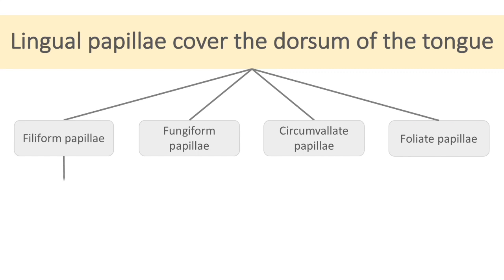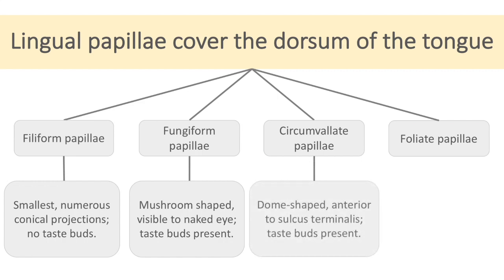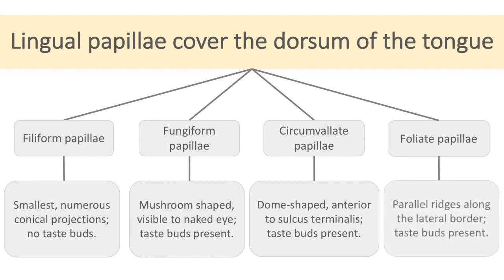Filiform papillae are the smallest and most numerous types of papillae — they are conical projections on the surface. Fungiform papillae are mushroom-shaped projections visible to the naked eye as bright red spots. Circumvallate papillae are 8 to 12 large dome-shaped projections seen on the dorsal surface just anterior to the sulcus terminalis. Foliate papillae are low ridges found along the lateral border.